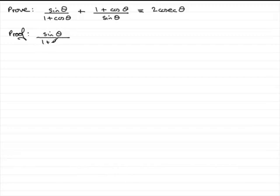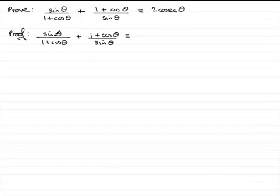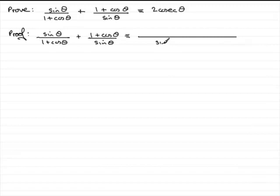So we've got sine theta over 1 plus cos theta, plus 1 plus cos theta over sine theta. We need to create one term, and since we've got a couple of terms, we need to put this over a common denominator. The lowest common multiple of 1 plus cos theta and sine theta is those two multiplied together — sine theta multiplied by 1 plus cos theta.